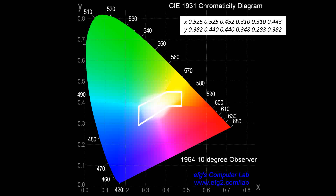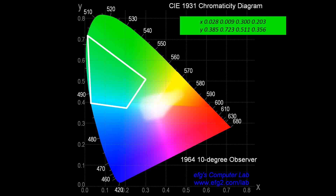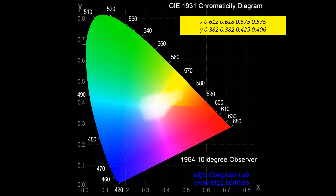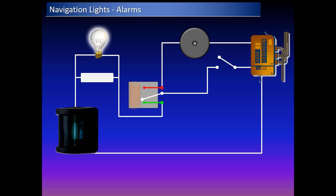If a light falls on the borderline of the chromaticity chart, the green light may be confused for yellow or orange, and the yellow light may be confused for white. The chromaticity sectors are specified in the chromaticity diagram to prevent this.